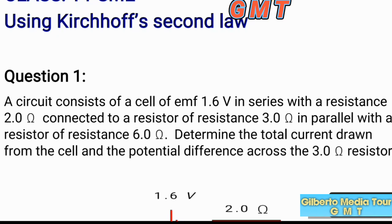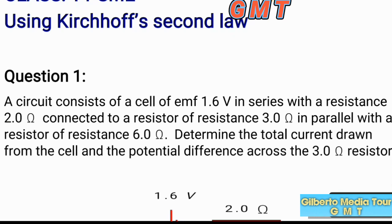We are given 1.6 V as the electromagnetic force of the battery. We also have a resistance of 2 ohms connected in series with this EMF, and another resistance of 3 ohms connected in parallel with a resistance of 6 ohms. We need to determine the total current drawn from the cell and the potential difference across the 3-ohm resistance.